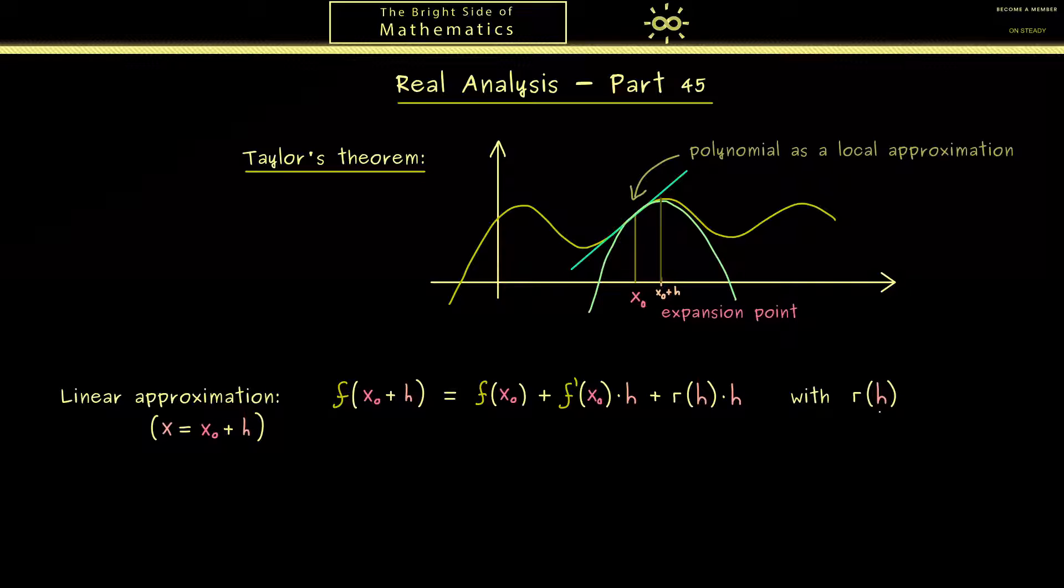Now one important property missing here is that r of h goes to 0 when h goes to 0. In fact this is the property that makes the tangent the best linear approximation.